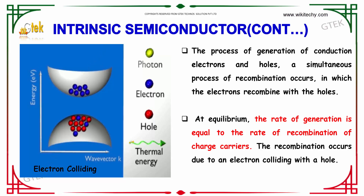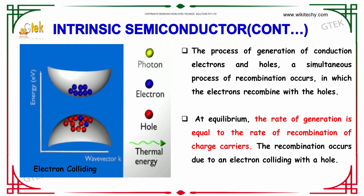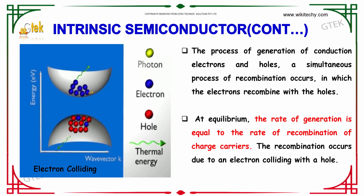The process of generation of conduction electrons and holes occurs simultaneously with a process of recombination, in which the electron recombines with the holes. The thermal energy provides a photon which creates the electron-hole pair. The electron moves and a hole is created. At equilibrium, the rate of generation is equal to the rate of recombination of charge carriers. The recombination occurs due to an electron colliding with a hole.